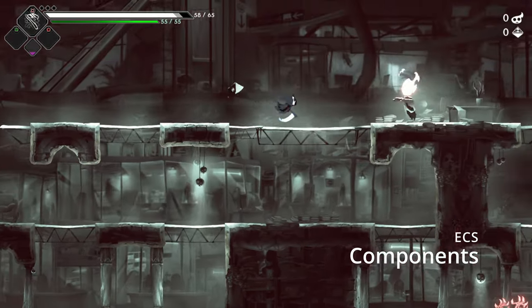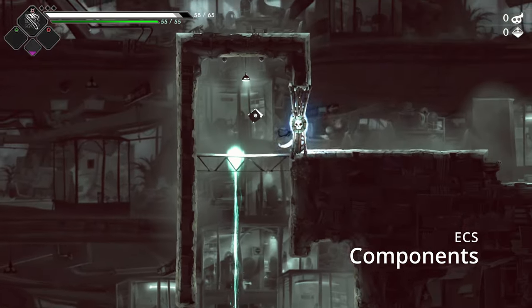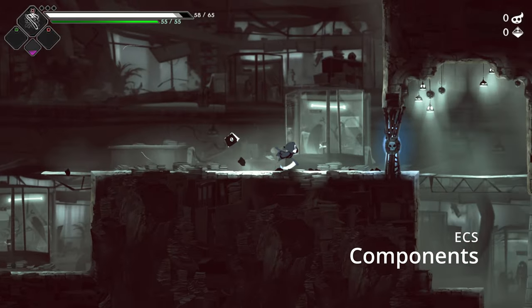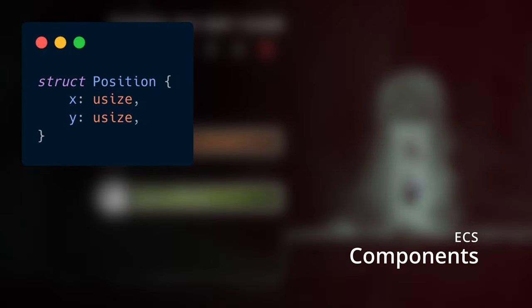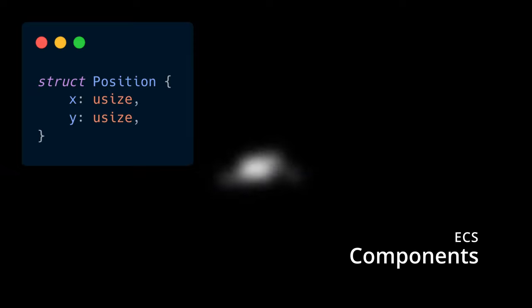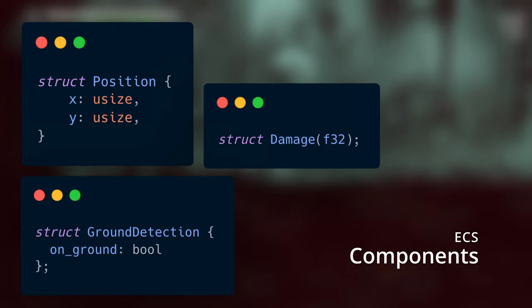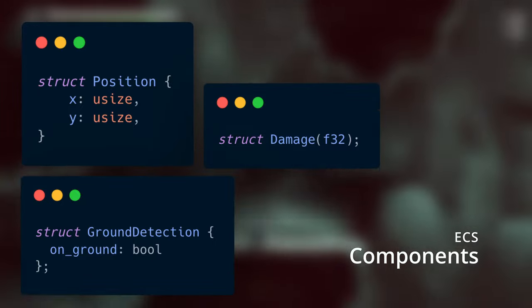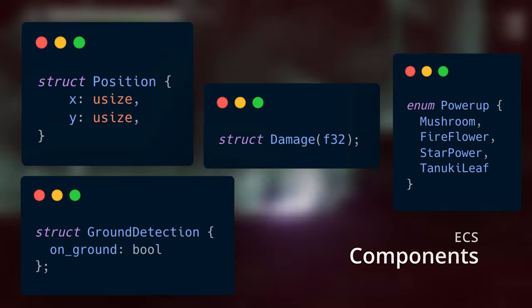Components, then, are data that we attach to those entities. Components in Bevy specifically are structs or enums that let us hold all sorts of data. This is how our entities get differentiated between player, enemy, tile, etc. For example, we could have a position component representing the position of an entity on a grid in two dimensions, or a damage component representing how much damage has been applied to an entity. A ground detection component could hold a value that tells us whether the player is on the ground or not, so we know if they should be able to jump, preventing infinite jumps. Or a power-up component could tell us which power-up just popped out of a block.